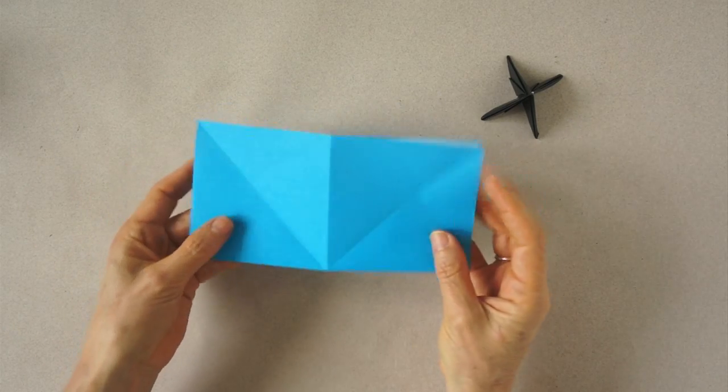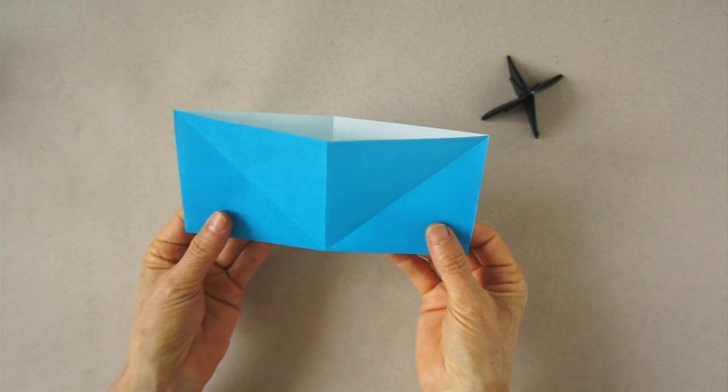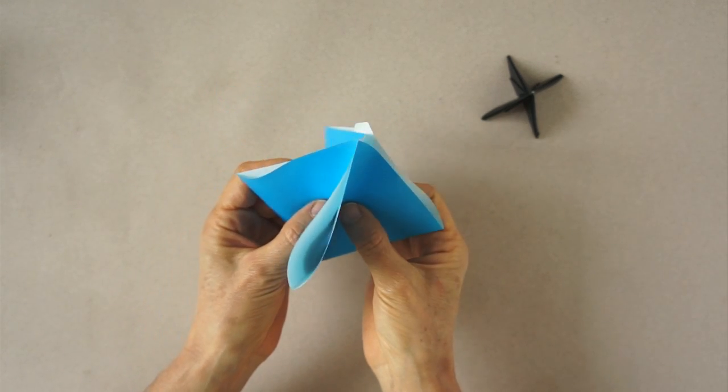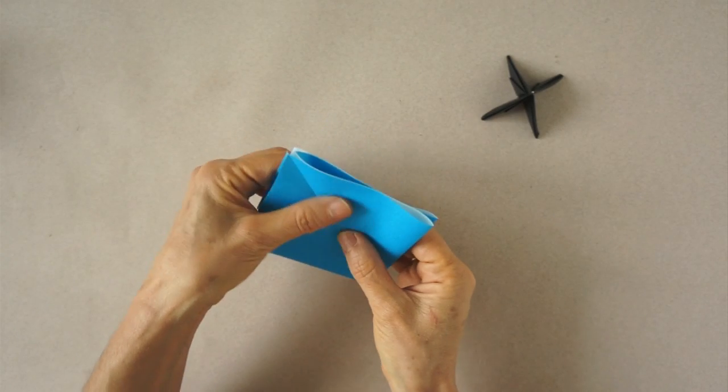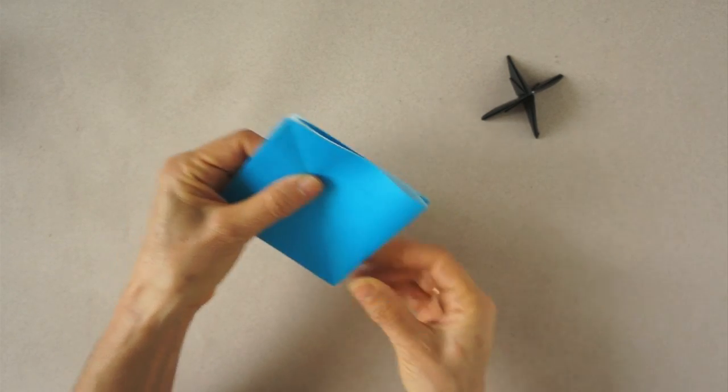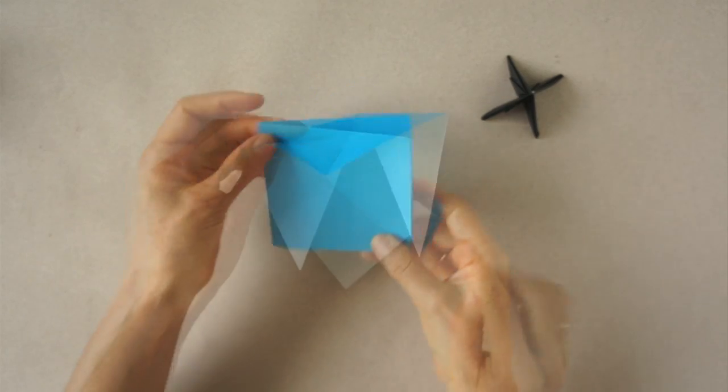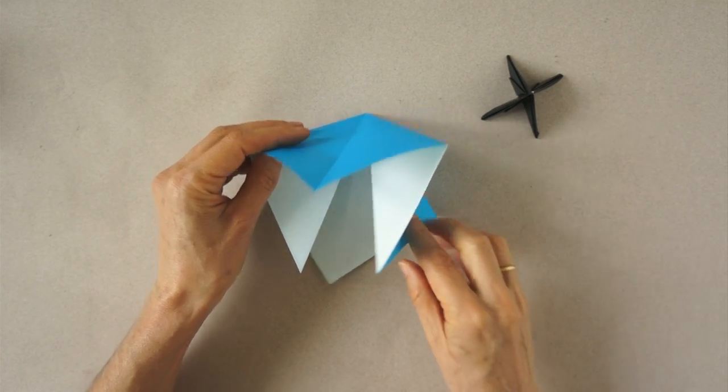We leave this folded. Hold it from each side and push to the center. We collapse and make what is called a preliminary base. We rotate, the open side is pointing down.